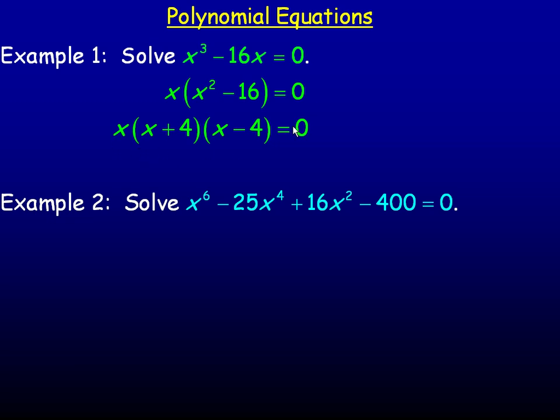If we set x equal to 0, we will get just 0 for a solution. If we set x plus 4 to 0, we will get negative 4 because the negative 4 plus 4 makes that factor 0. And a third factor, remember these three factors all multiply to give you 0.